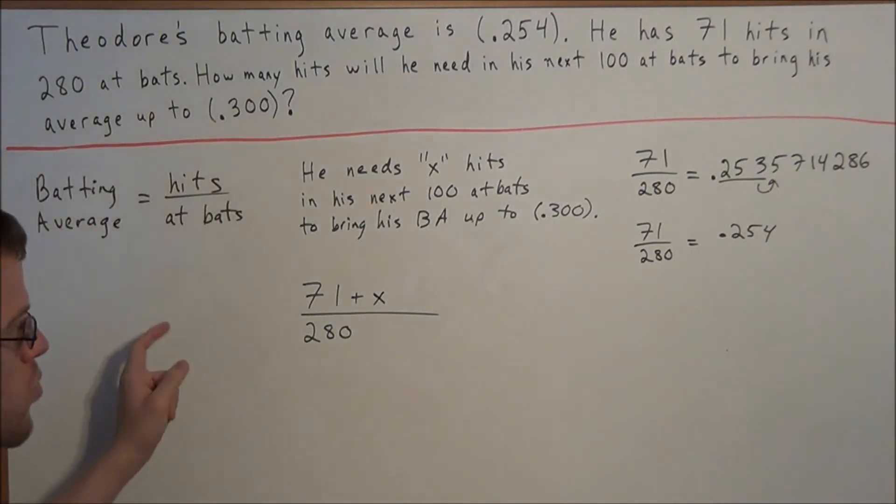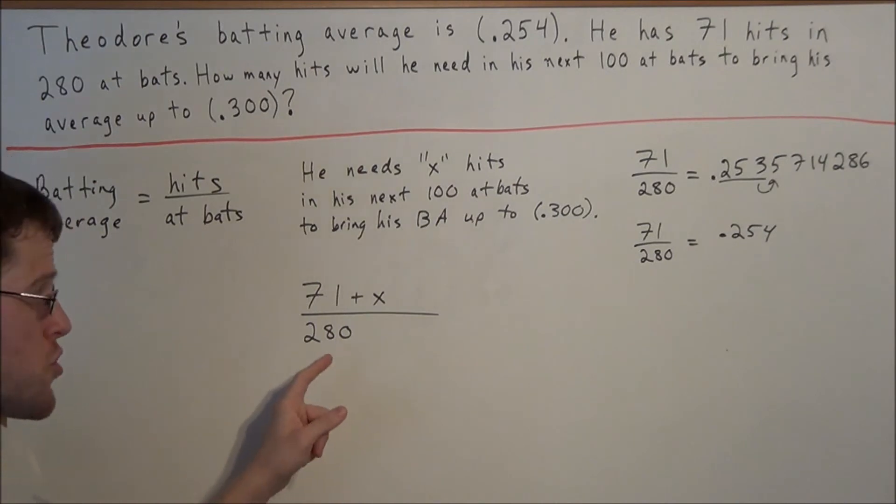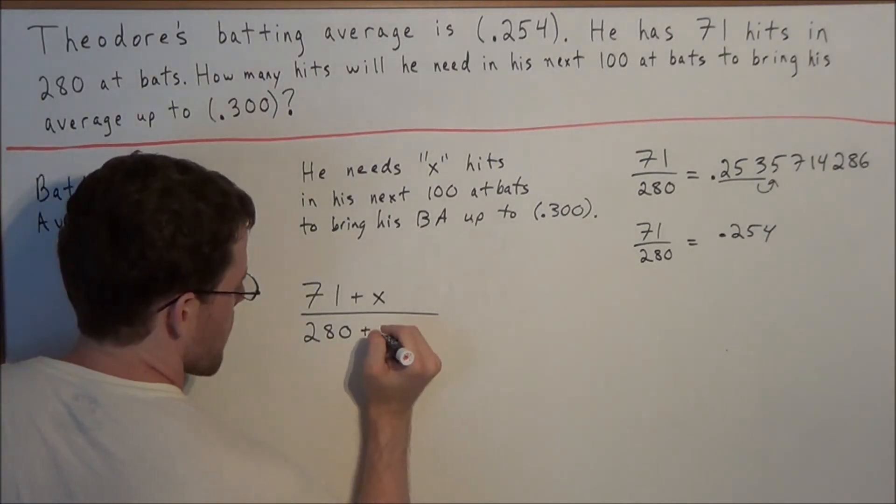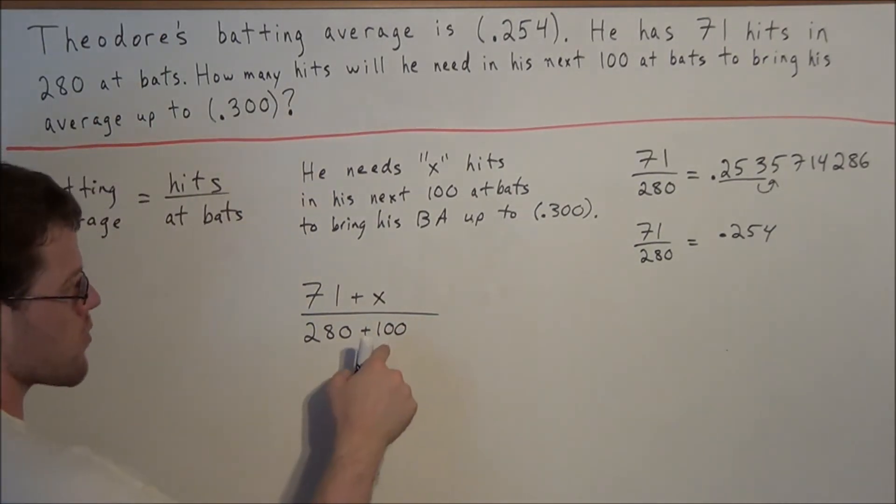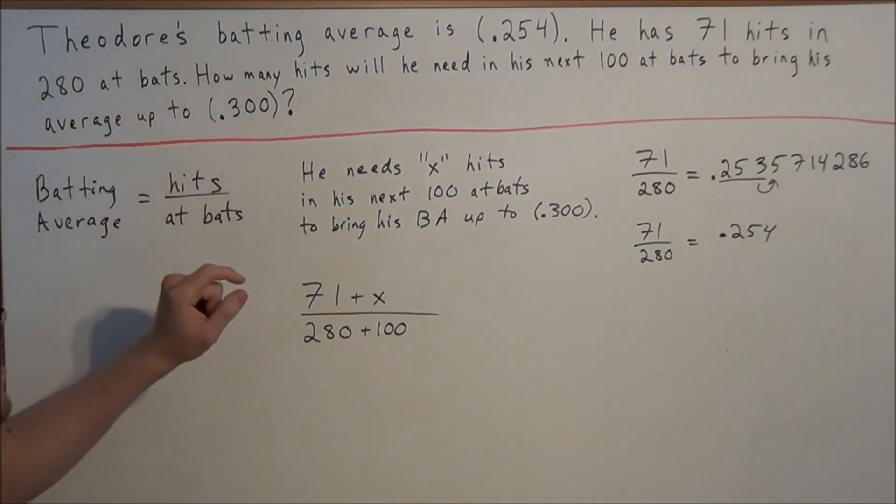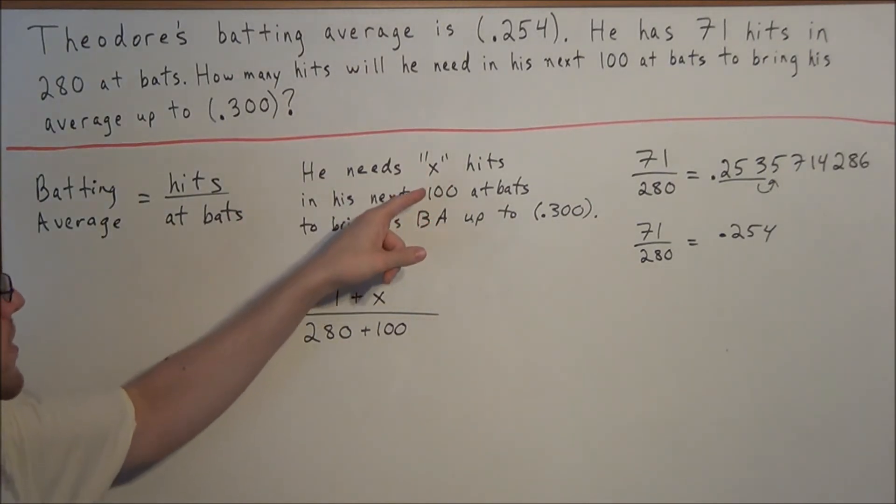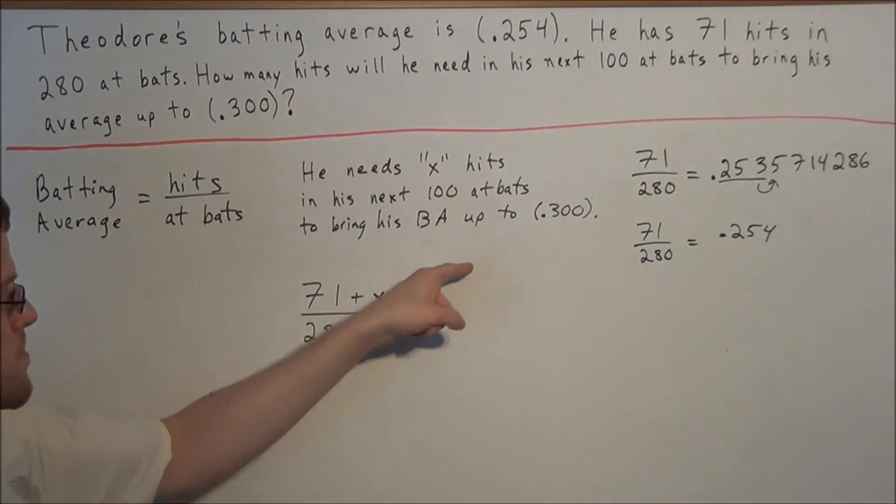And now in his next 100 at bats, it's going to bring his total number of at bats from 280 to 280 plus 100, because in 100 more at bats, he'll have come to the plate 100 more times. So we're going to add 100. And now we're curious, what value of x will bring his batting average up to 300?